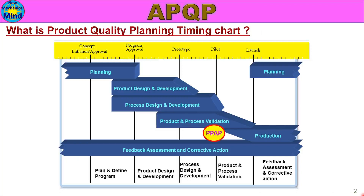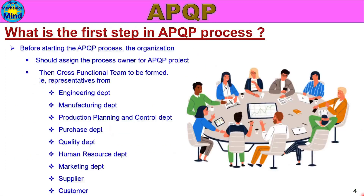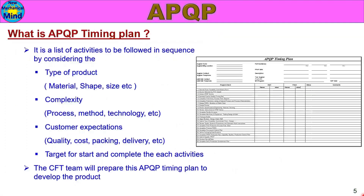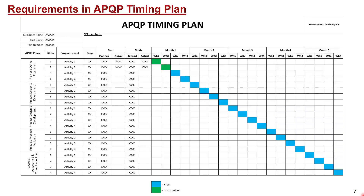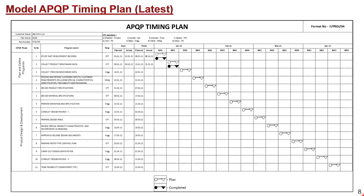Part 2 is the product quality planning timing chart. What is the first step in APQP process? What is APQP timing plan? Model APQP timing plan, old format. Recommends in APQP timing plan. Model APQP timing plan, latest format. Let's see what happens in detail.